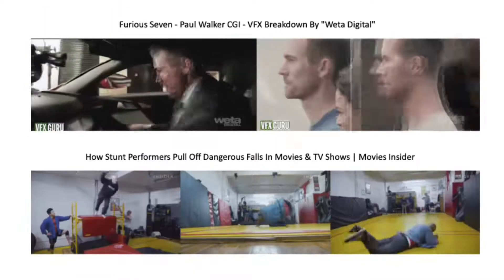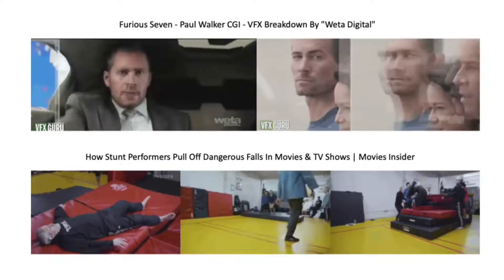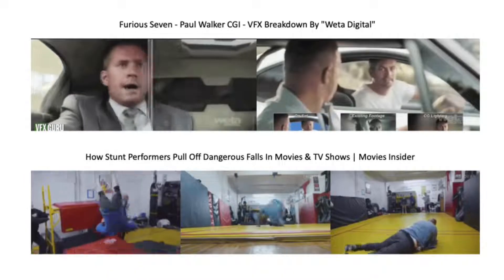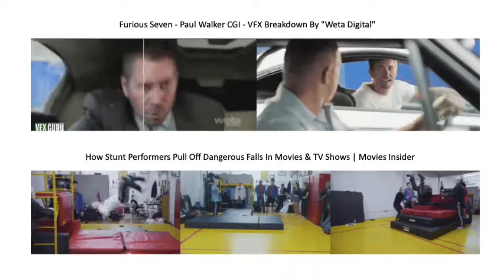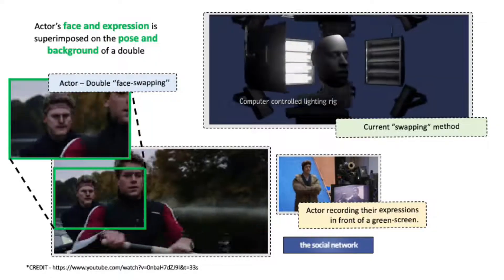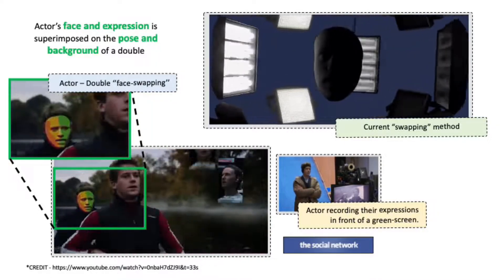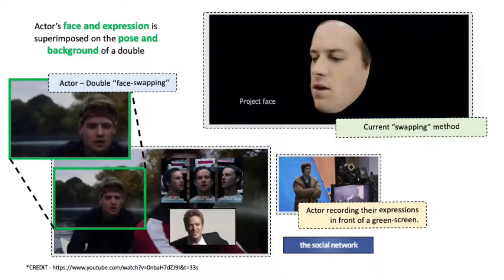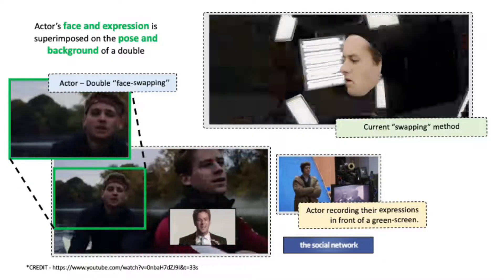Body doubles are also used beyond such scenes. For instance, Paul Walker was played by his brothers, Cody and Caleb Walker, in Fast and Furious after his death. Doubles also take the place of actors during stunt scenes. However, the technologies needed for replacing the double's face with the actor's face and expressions are extremely expensive and time-consuming, taking up to millions of dollars and months to complete.